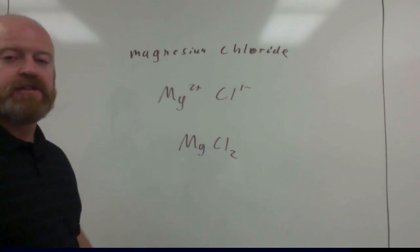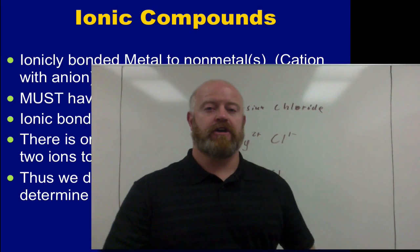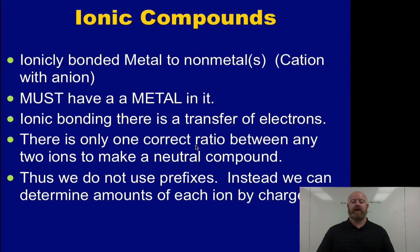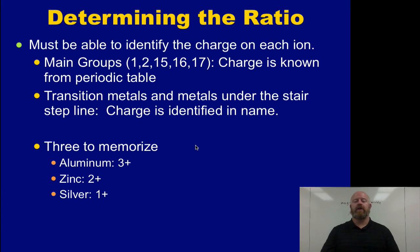Because we don't have prefixes, we have to be very careful about our charges and know what the charges are as we go through ionic compounds. Our first step is, how do we determine that ratio? We fall back to what are our different ionic charges that each atom is going to generate when they turn into ions.